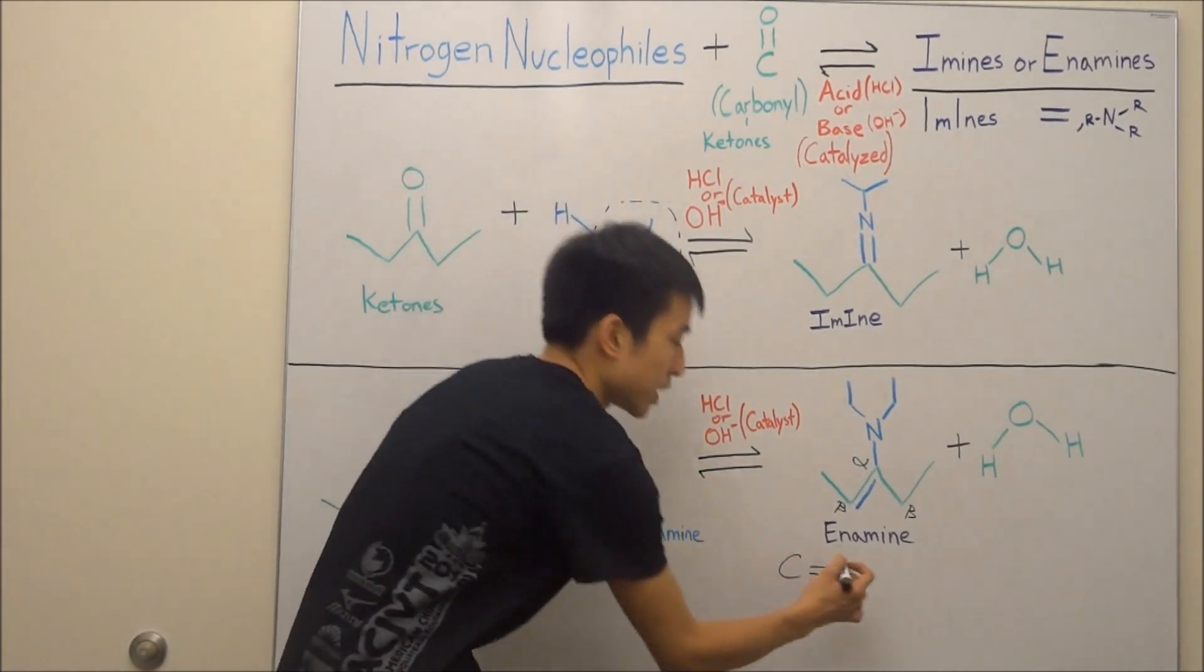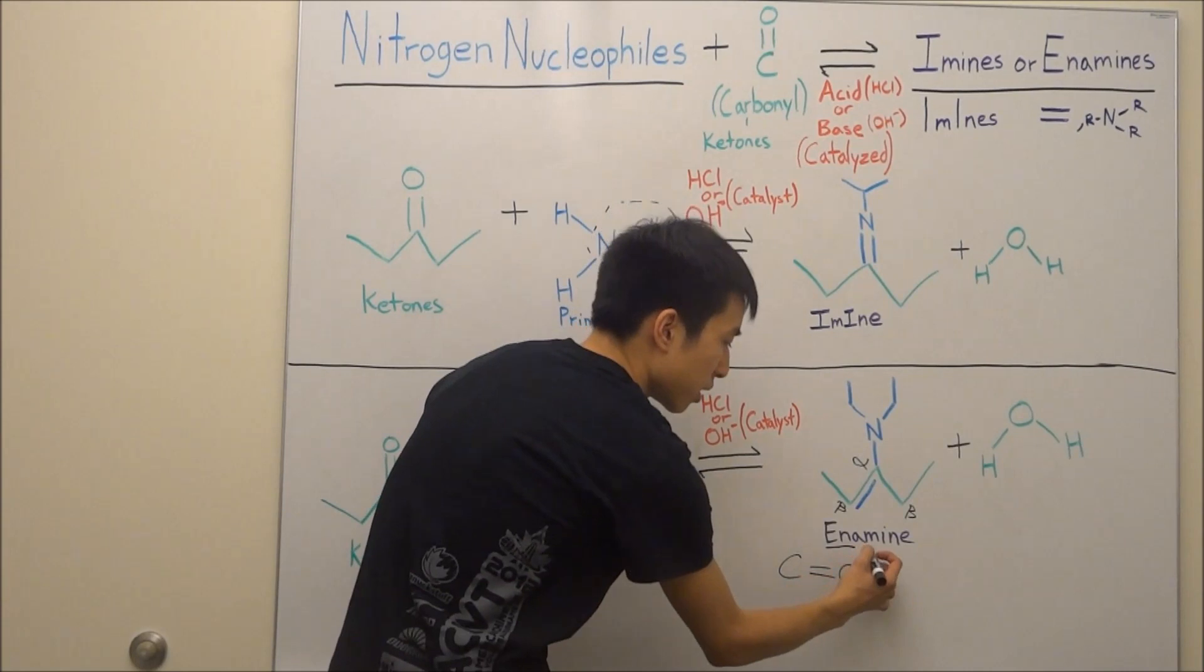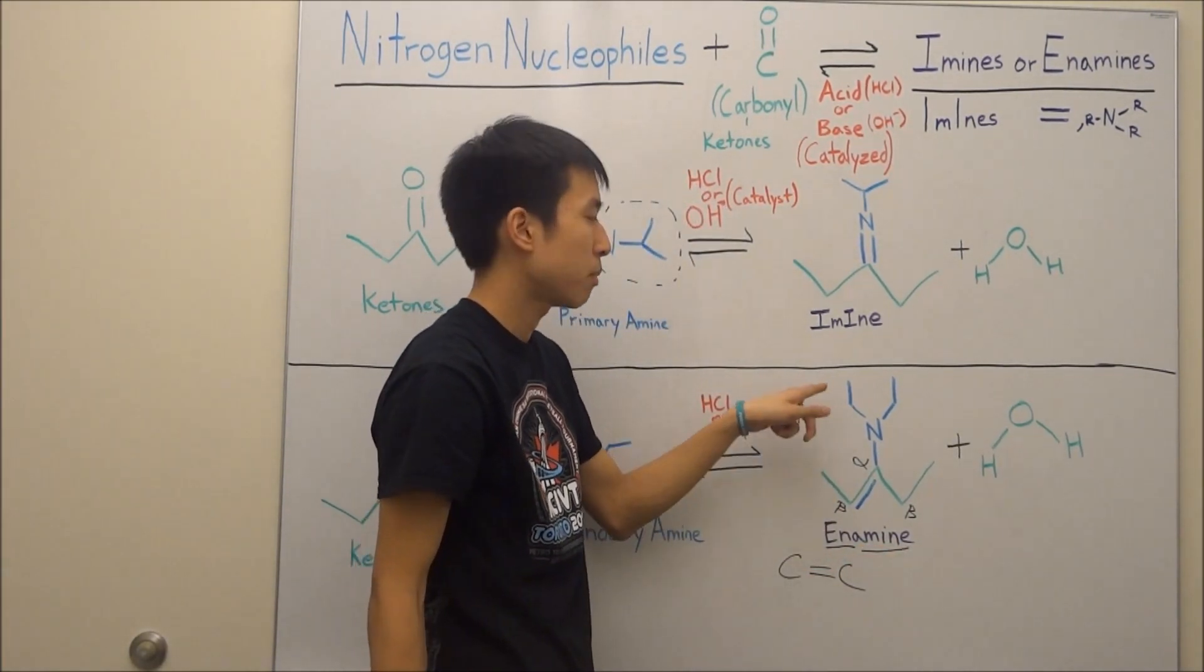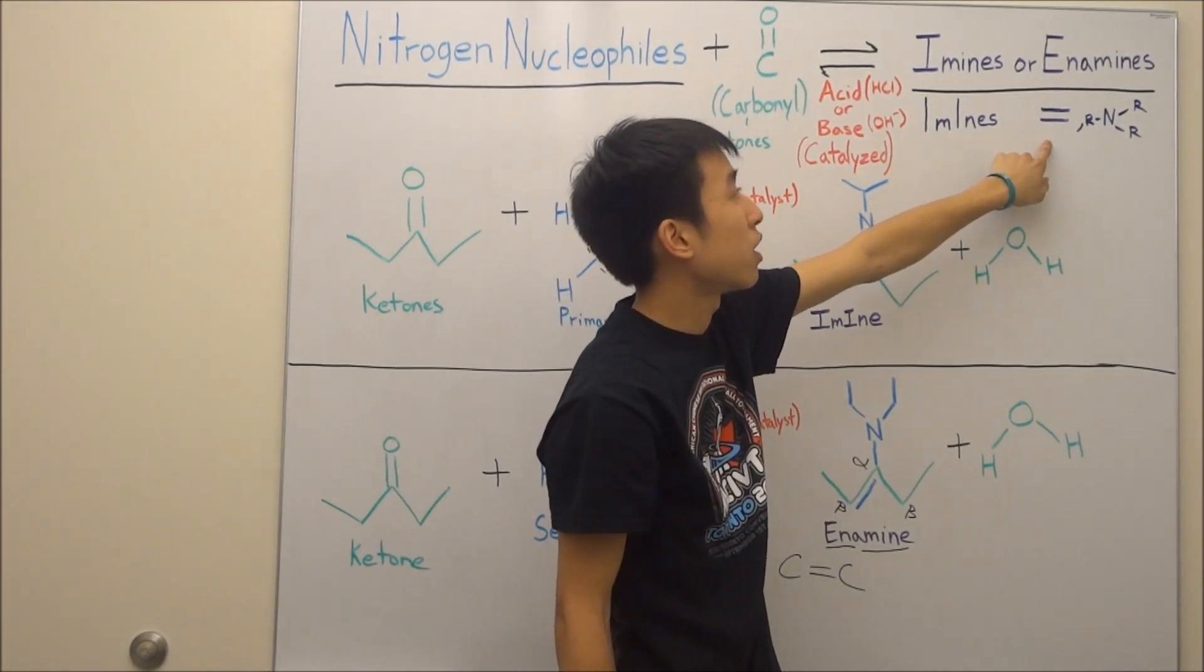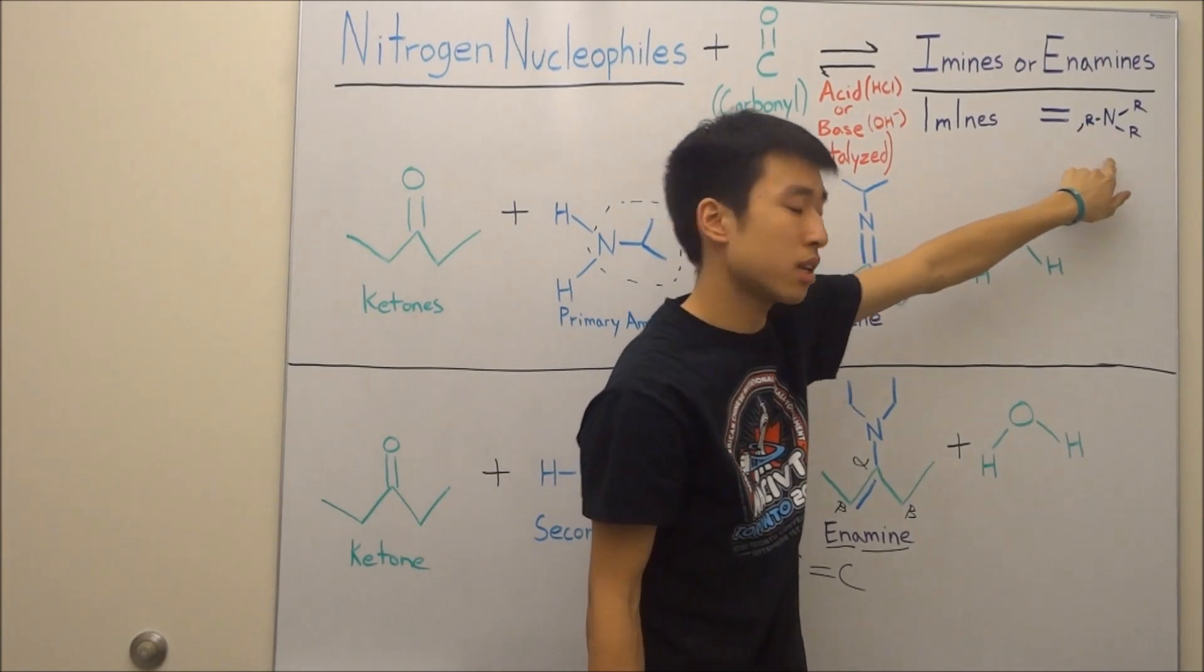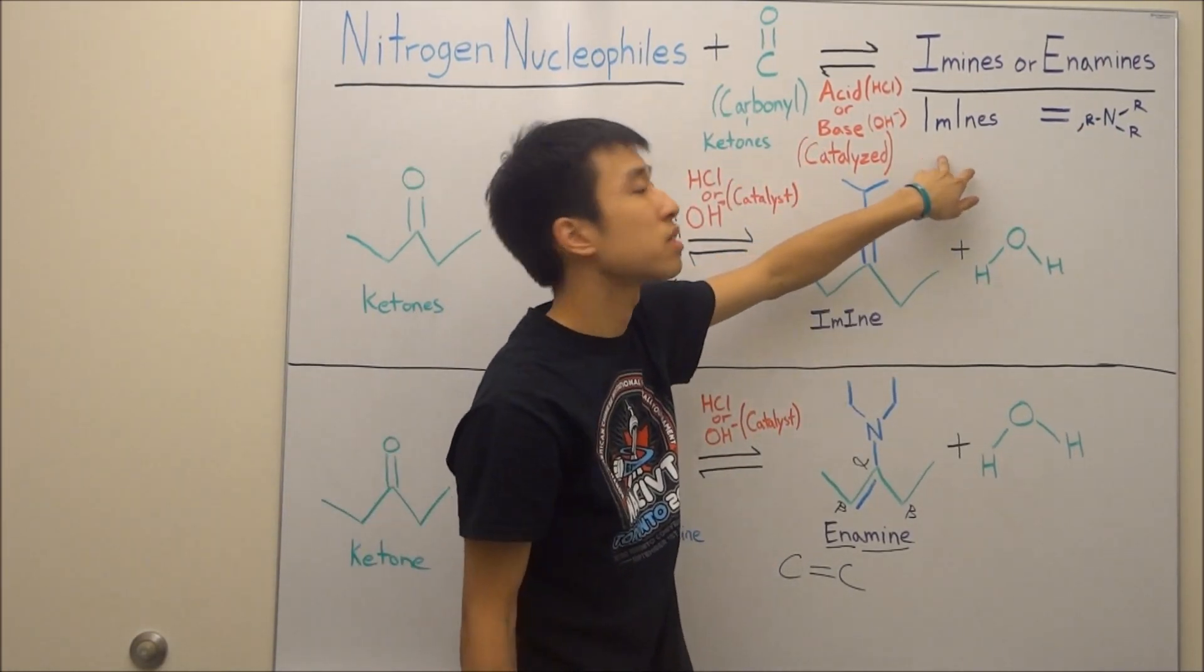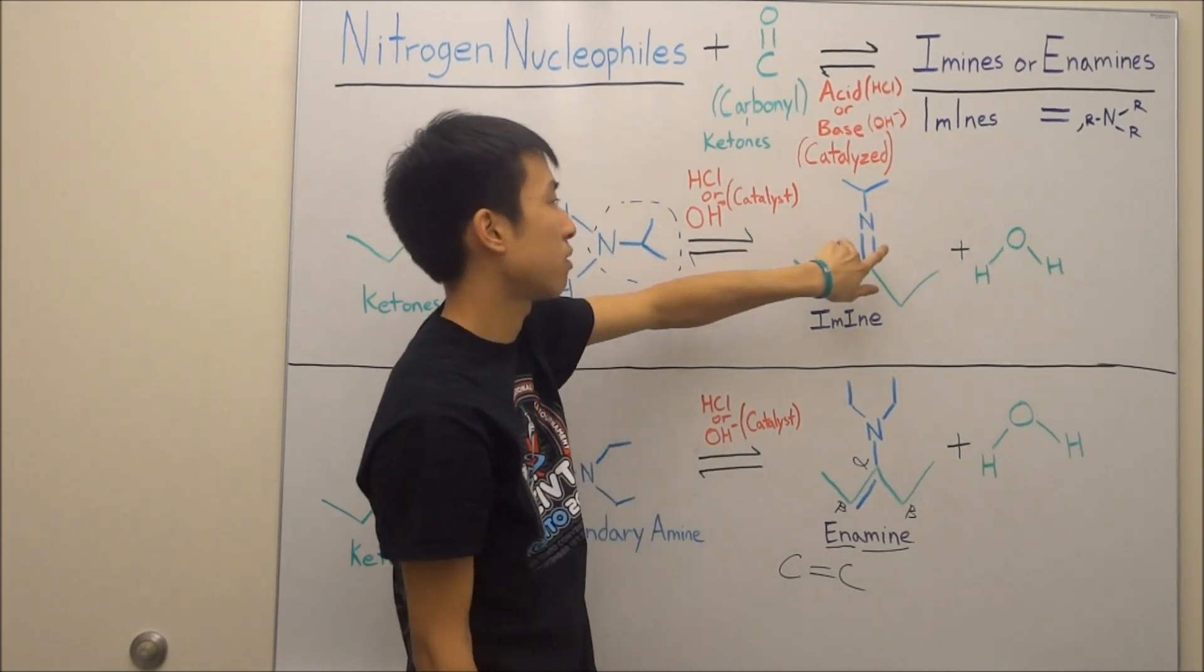Well, in your enamine, the reason why there's an ene part here is because you have an alkene there. And then, the amine is basically this part here. The nitrogen bonded to carbons. And that's why I have this here. Enamine is basically an alkene with an amine. Right? Alkene with an amine. And an imine is just an amine with a double bond.